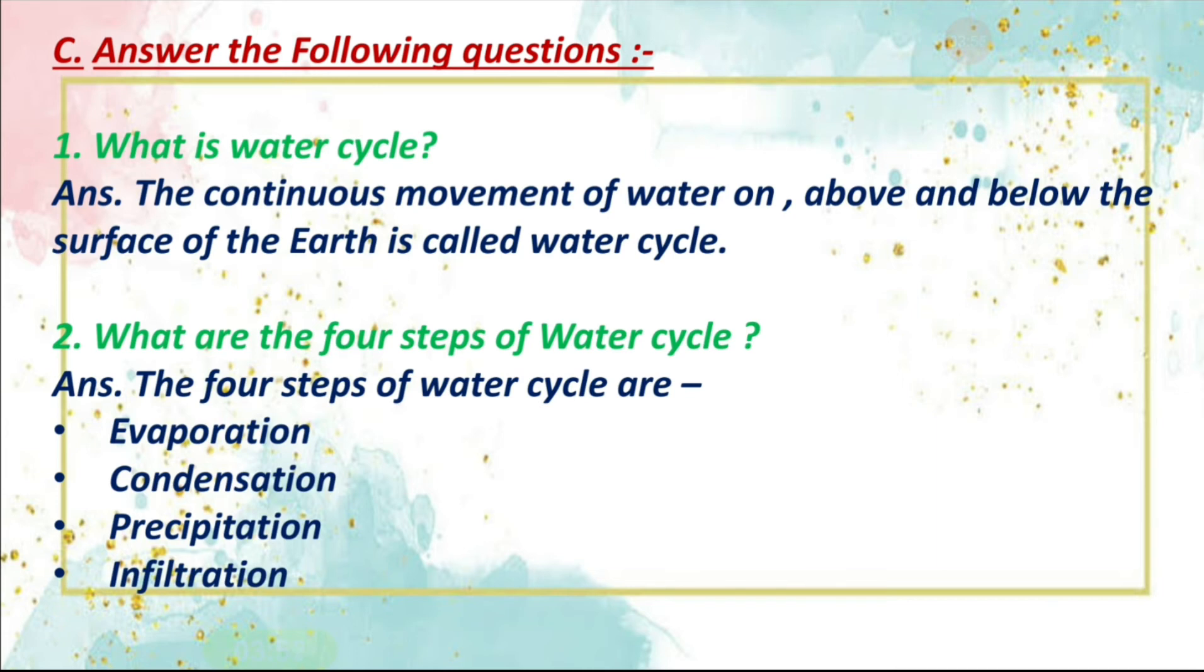Now, let's read our next question, which is, what are the four steps of water cycle? Answer is, the four steps of water cycle are, first is evaporation, second is condensation, third is precipitation, fourth is infiltration. So, these are the four steps of water cycle.